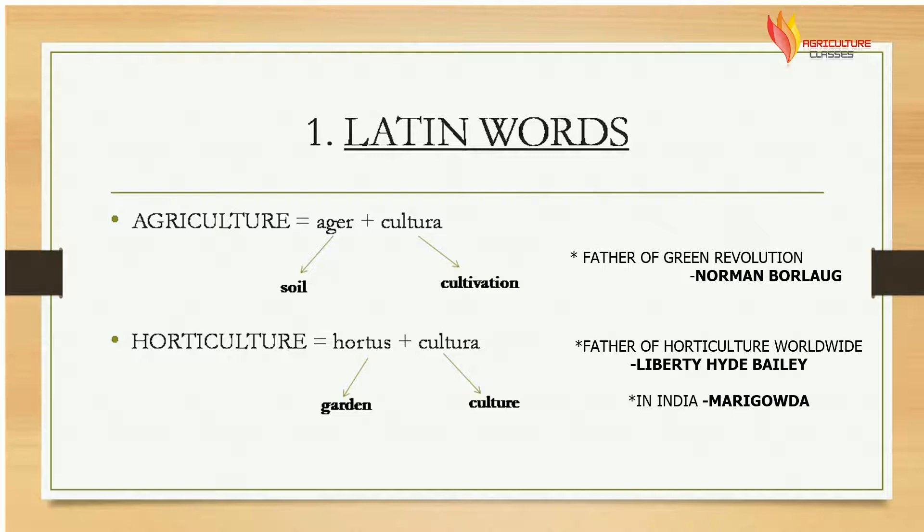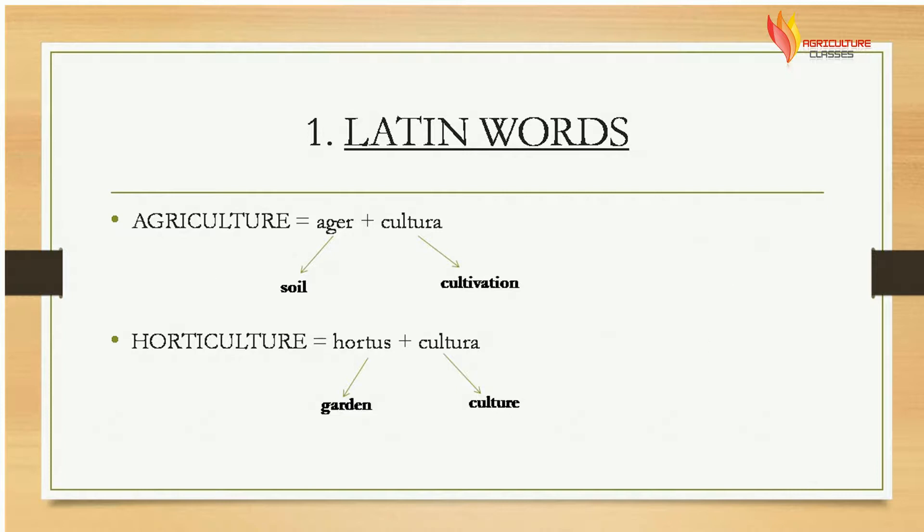Number one: agriculture is made up of two Latin words — agar and cultura. Agar means soil and cultura means cultivation. Next is horticulture, having two Latin words: hortus, which means garden, and cultura, which means cultivation.